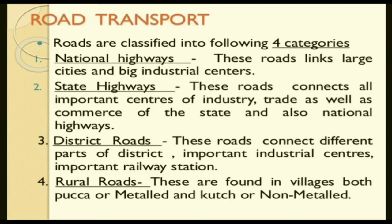Road transport is categorized into four parts. First is the National Highway, whose work is looked after by the state government — these roads link large cities and big industrial centers. Second is the State Highway, which connects all important centers of industries, trade, and commerce within a state. Third is District Roads, like those in Prayagraj district. Fourth is Rural Roads or Village Roads found in villages — both metalled and unmetalled.